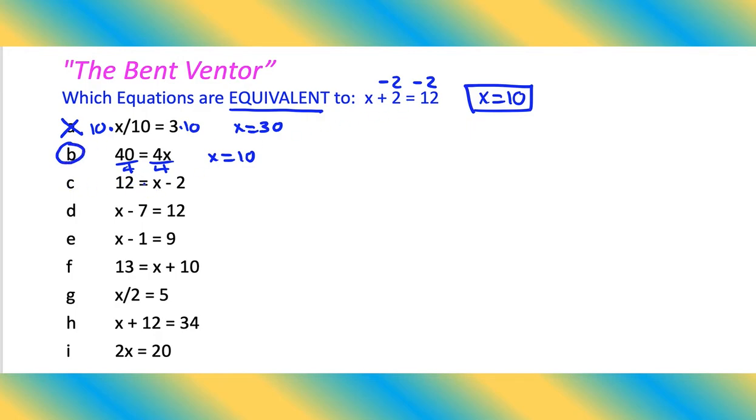C, let's see, we have 12 equals x minus 2, so we would add 2 to both sides. At first you're like, oh look, a 2 and a 12, it's got to be equivalent. Not really, here we go. x equals 14, so no.